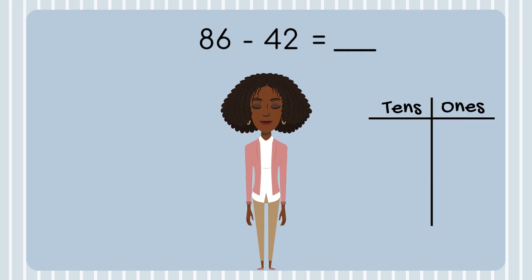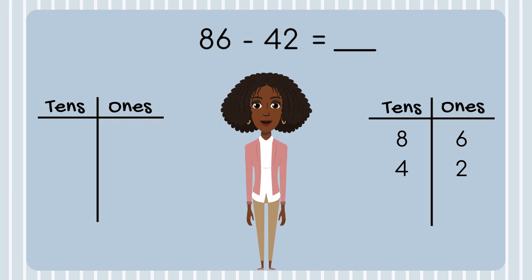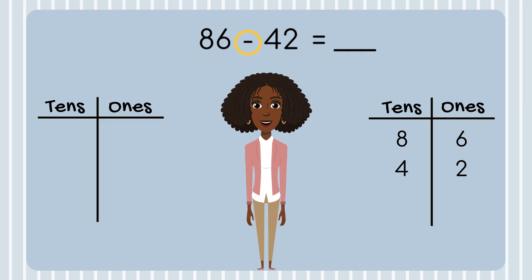I'll place my numbers from my equation into my place value chart. Next, I'll create another place value chart. This place value chart will be used to represent my equation using place value blocks. I am subtracting, so I'm going to model the total amount. My equation is 86 minus 42. 86 is the total, and I have to take away 42. So I will model the number 86 in my place value chart using place value blocks.